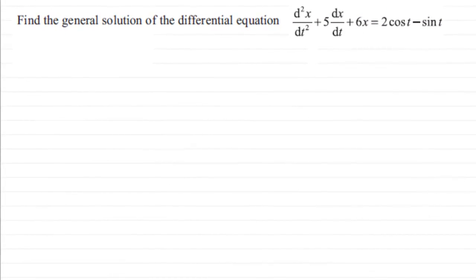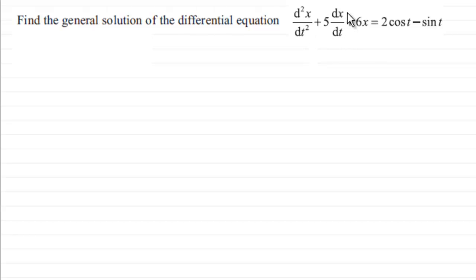Hi. In this question we're asked to find the general solution of the differential equation d²x/dt² + 5(dx/dt) + 6x = 2cos(t) - sin(t).